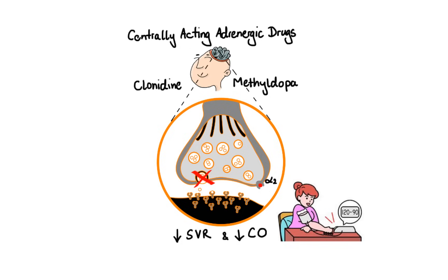Methyldopa on the other hand also lowers blood pressure through the same mechanism, however unlike clonidine it is not an agonist itself, so first it must be converted to its active metabolite called methylnorepinephrine.